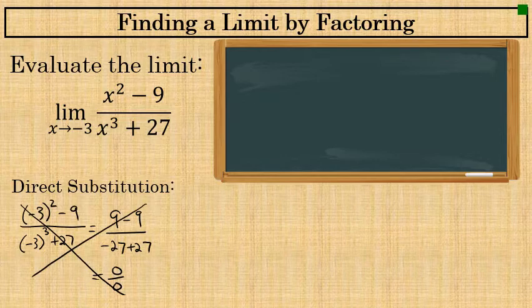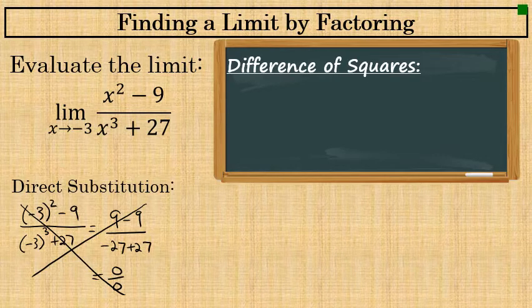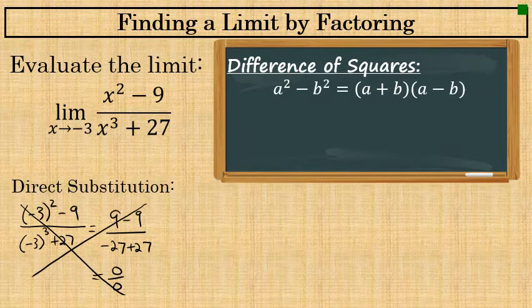The next thing to try is to factor the numerator and denominator and see if any factors can be cancelled. In the numerator, x squared minus 9 is a difference of squares. Recall from algebra the formula: a squared minus b squared equals a plus b times a minus b.